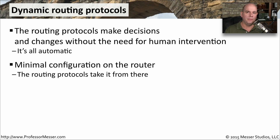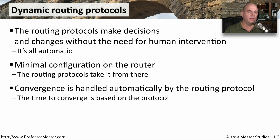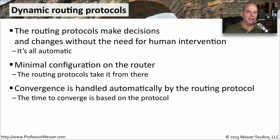If there is a problem, these routers all have to converge. They communicate amongst each other that a route is no longer available — perhaps an entire router has been disconnected from the network. The routers all communicate and decide what the new next best hop is going to be, then update everyone else with the new set of routes. The time that it takes for that to occur may be a number of minutes or a number of seconds. Convergence is generally specific to the dynamic routing protocol you're going to use, and that's one of the considerations when deciding which protocol to use.